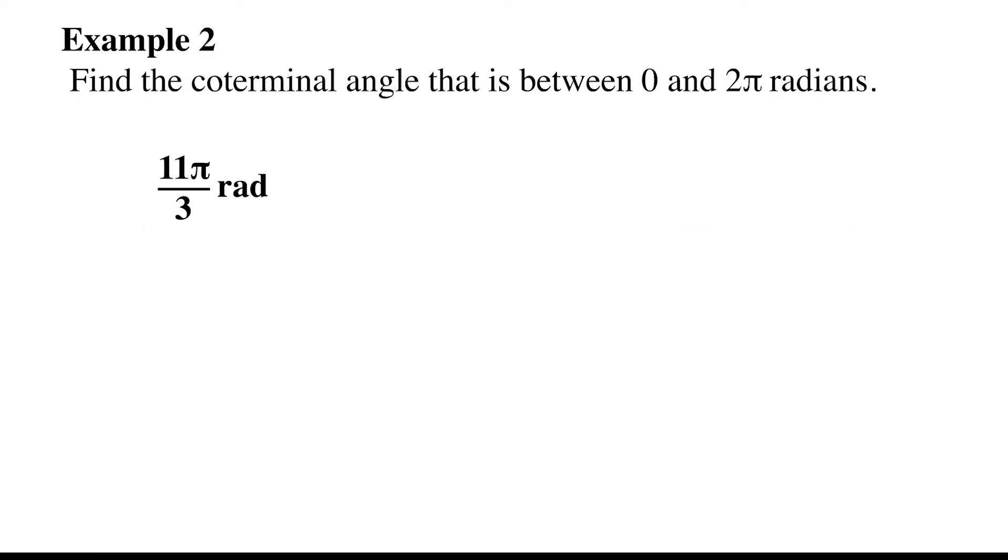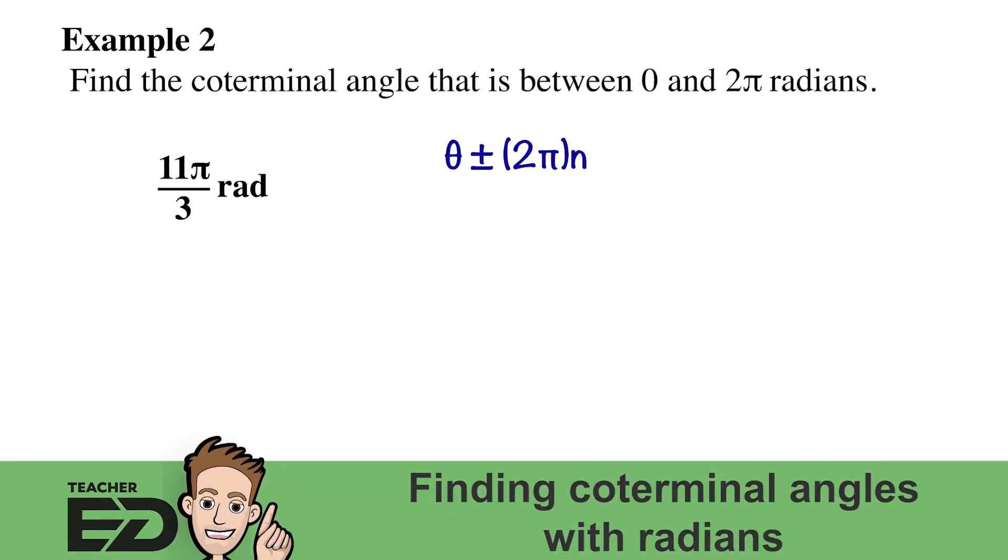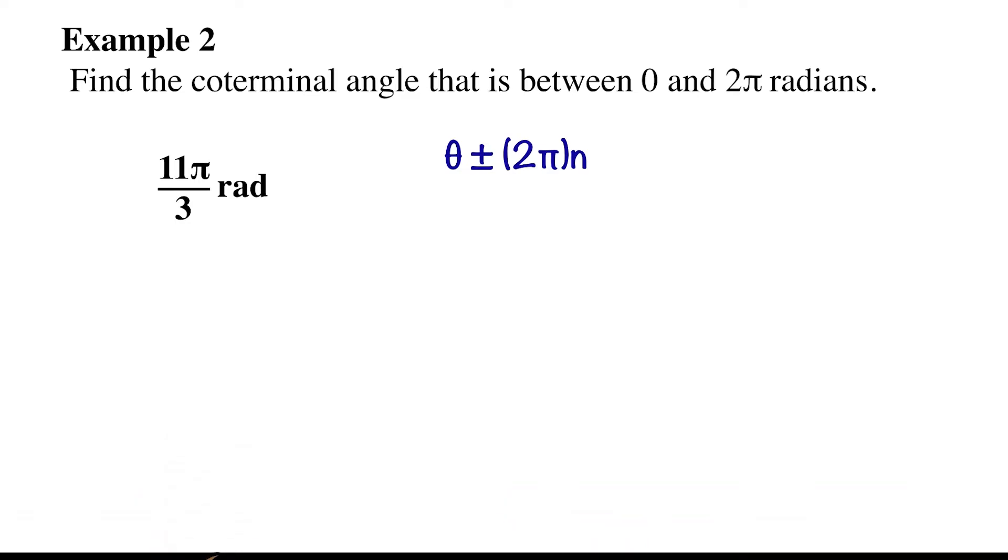We can use radians too. Notice how the formula changes from 360 to 2 pi. We need to find an angle that is between 0 and 2 pi radians.